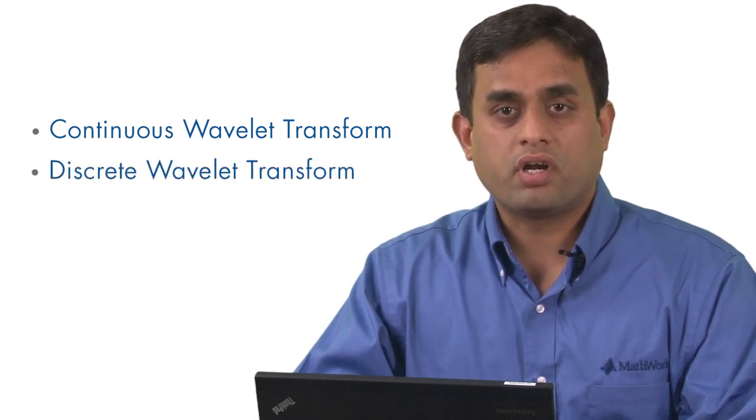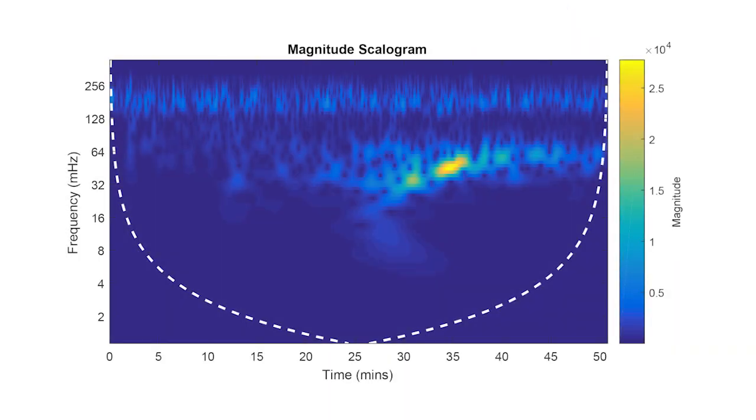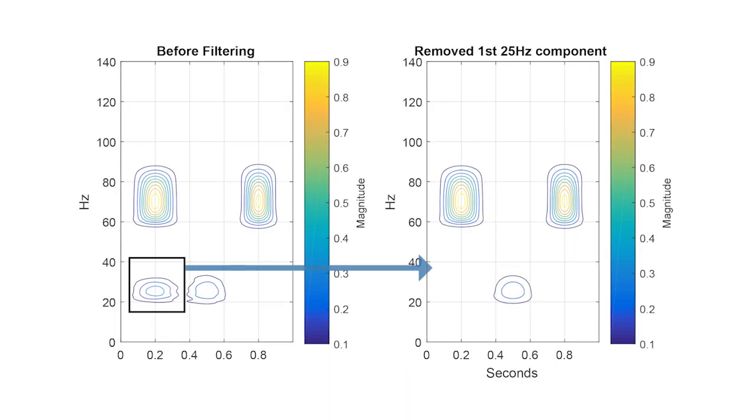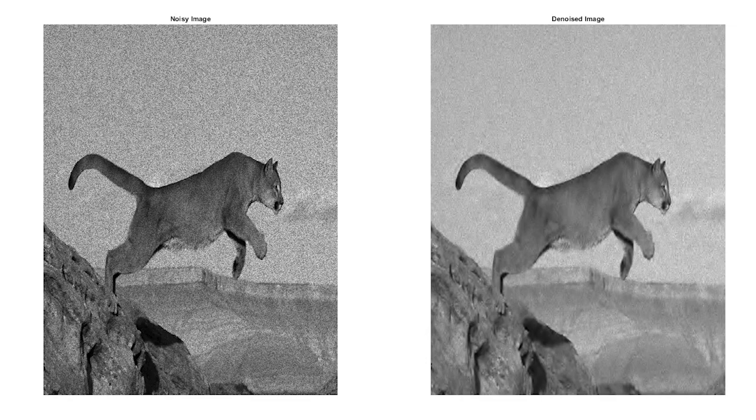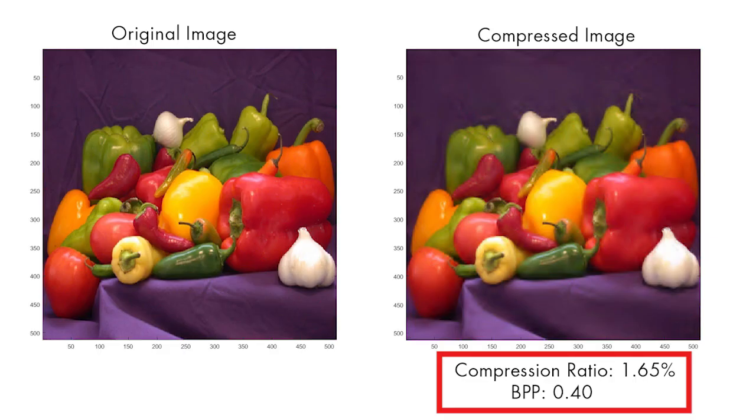Key applications of continuous wavelet analysis are time-frequency analysis and filtering of time-localized frequency components. The key applications for discrete wavelet analysis are denoising and compression of signals and images.